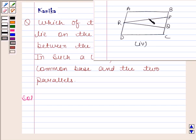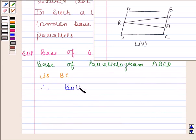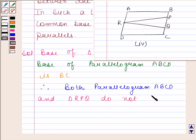Now consider the triangle RPQ and parallelogram ABCD. The base of triangle RPQ is PQ and the base of parallelogram ABCD is BC. Therefore, it implies that both the figures, that is parallelogram ABCD and triangle RPQ, do not have a common base.